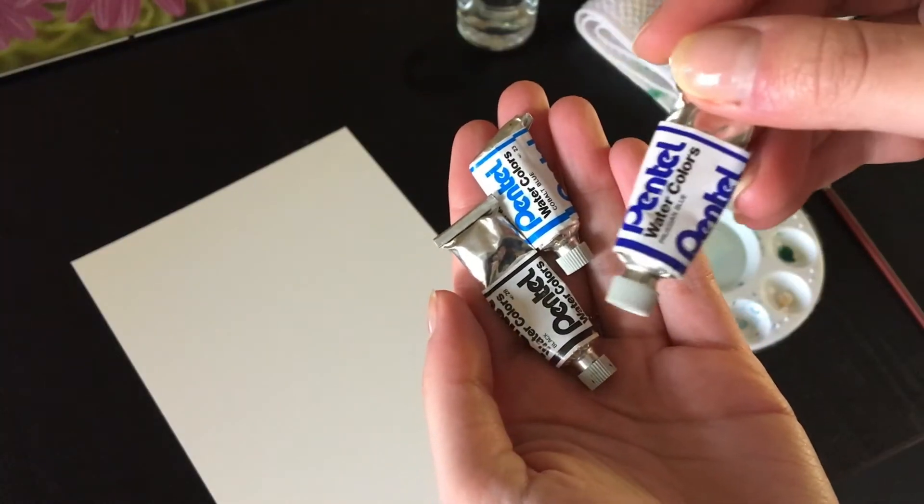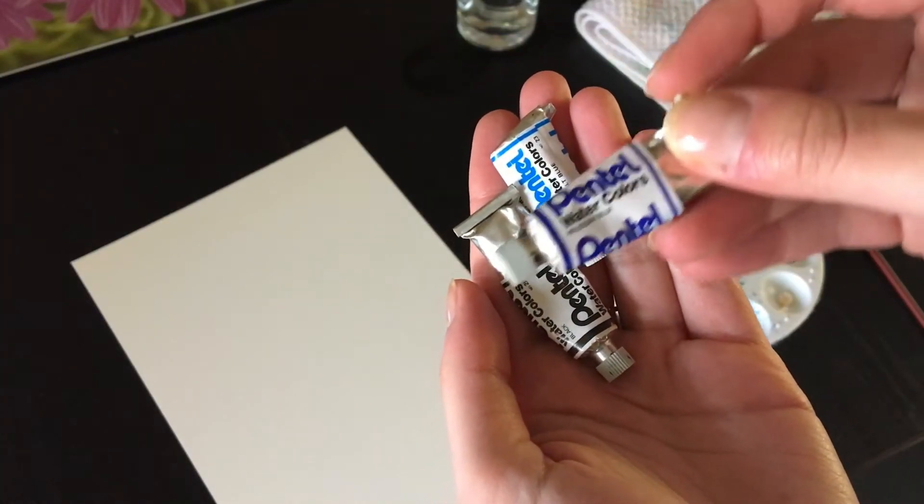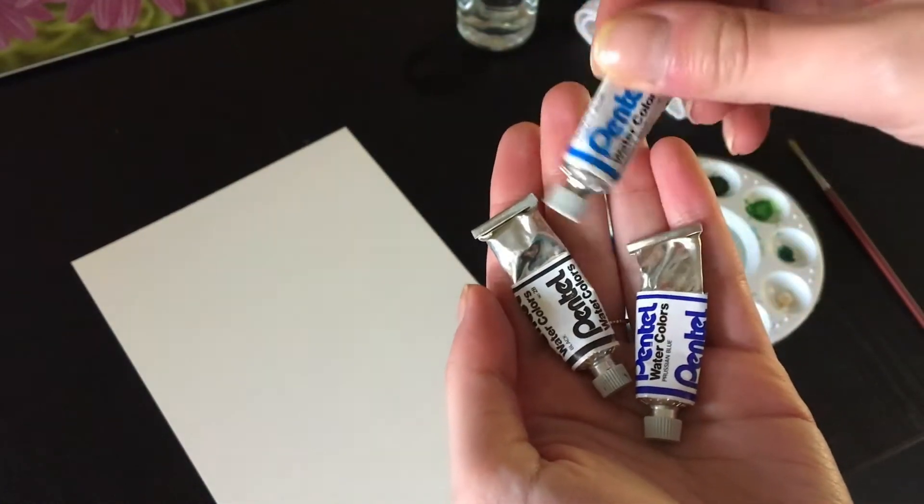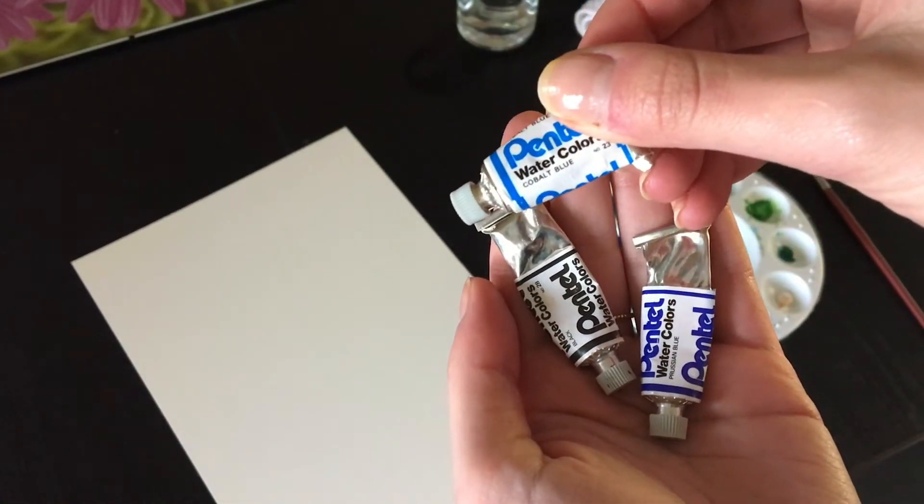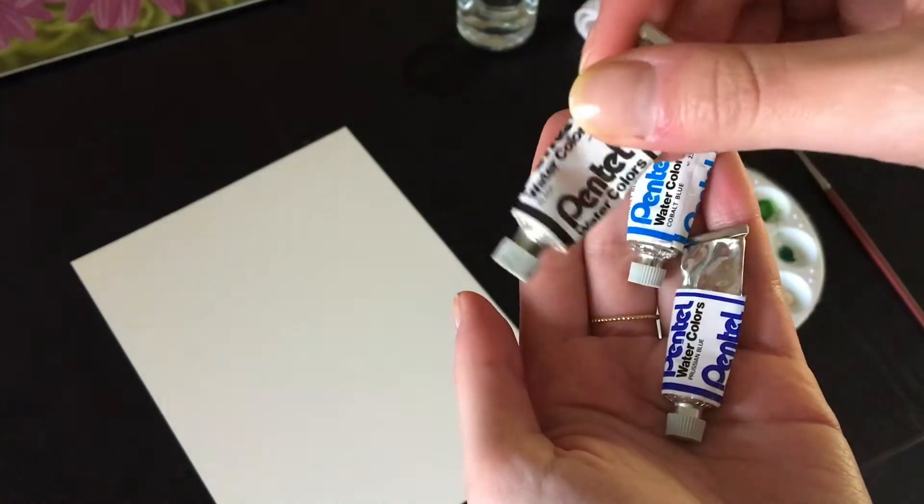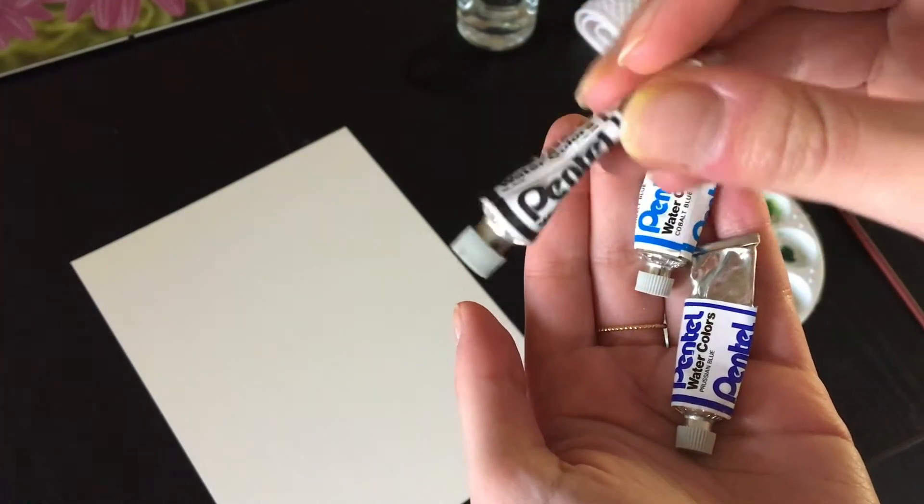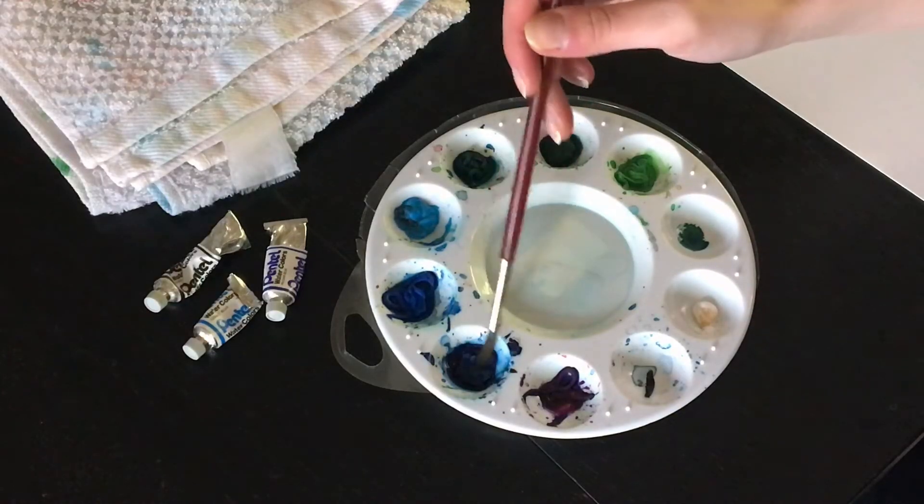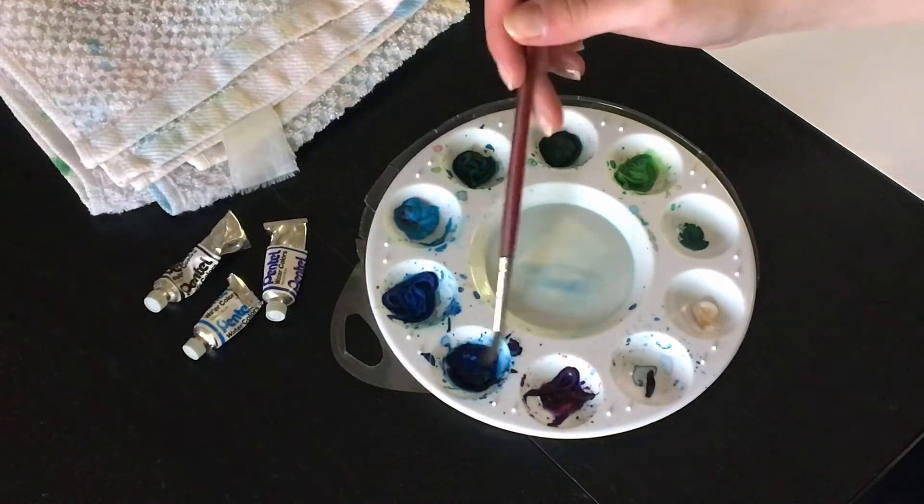You'll need watercolor paper, a brush preferably a tapered one, watercolor paint in the color of your choice, a frame—I got a simple glass frame from the dollar store for about two to three dollars so it's very budget friendly—two separate cups of water, one for washing your brush and one that will stay clean, a paper towel or something to wipe your brush on, and a plate or a palette to mix your paint.